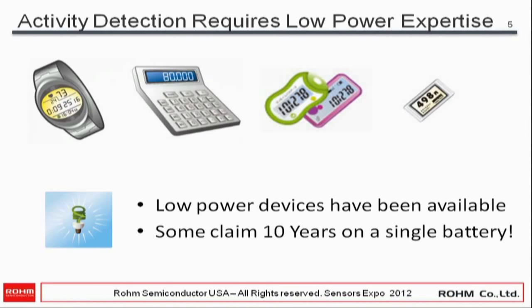Activity detection requires low power expertise. Activity detection has to keep running in the background for a long time, so you cannot have this driven by an application — it has to be on all the time. Devices like watches, calculators, and security tokens run forever; some claim 10 years on a single coin cell battery. If you can take that expertise and apply it to phones, that's a different approach to solving SensorHub.